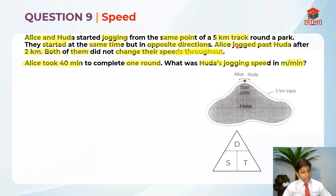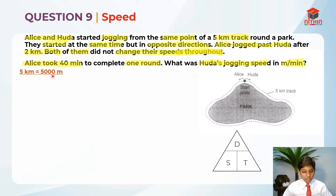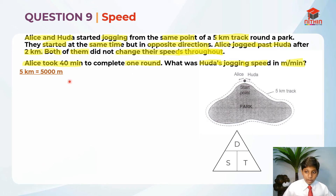The first step is to convert 5km into meters, which gives us 5000 meters. Remember: kilometers to meters is times 1000, and meters to kilometers is divided by 1000.